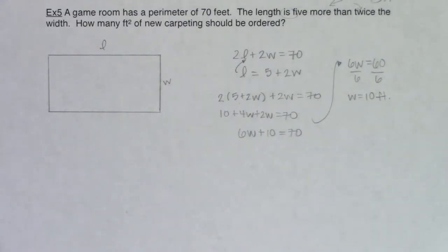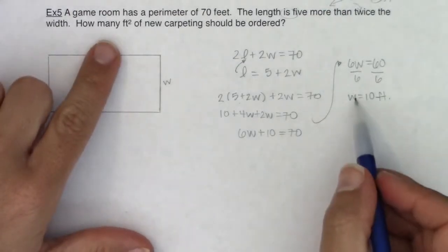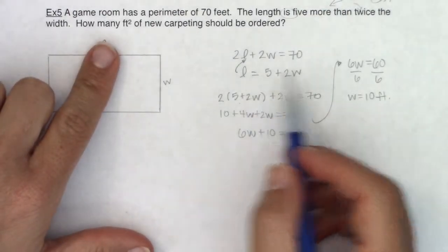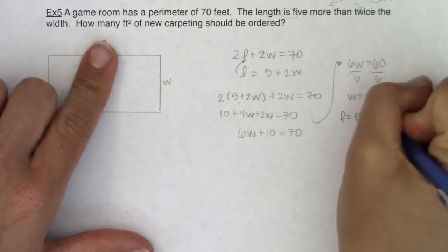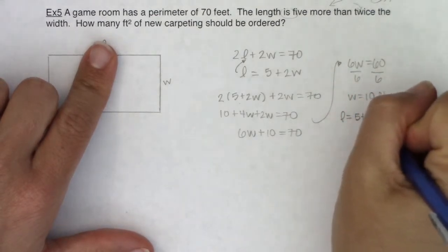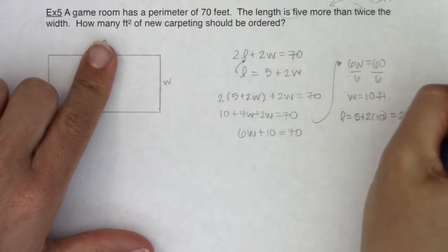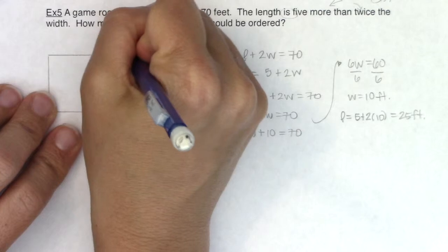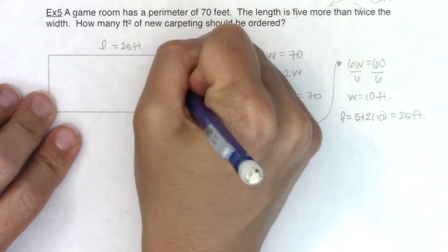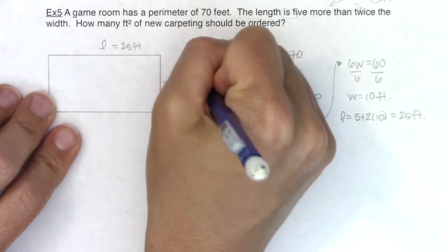In the last example we had centimeters. This is a larger rectangle because we're talking about a room, which we usually measure in feet. I've got the width but I still need the length. L equals 5 plus 2W, so 5 plus 2 times 10 equals 25 feet. The length is 25 feet and the width is 10 feet.